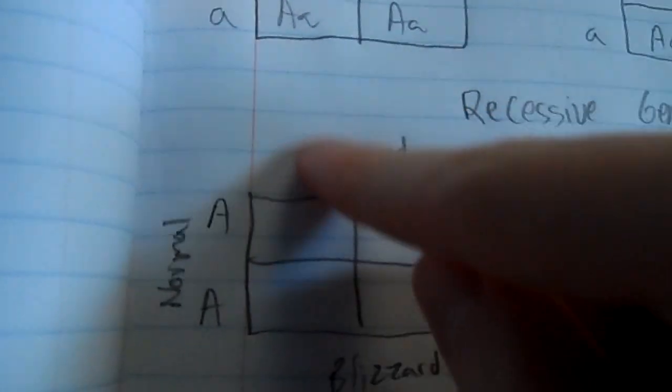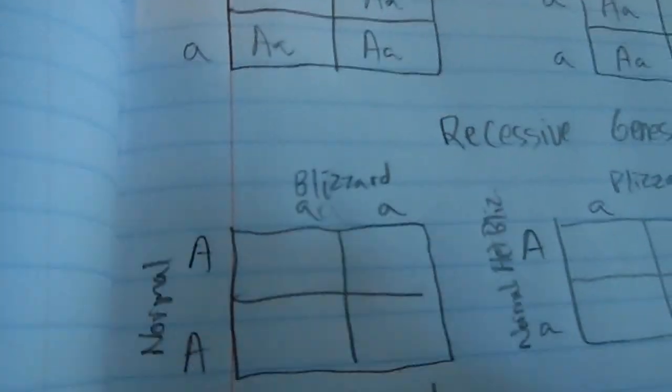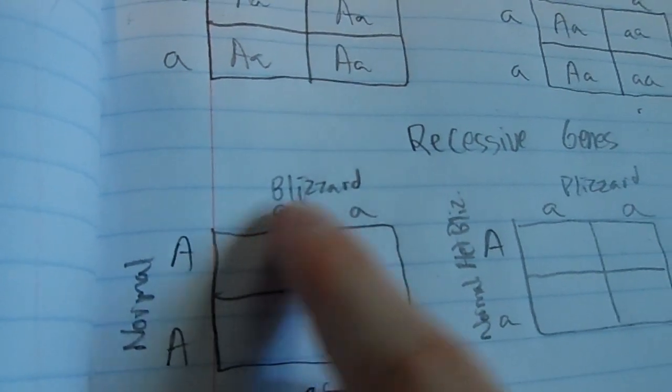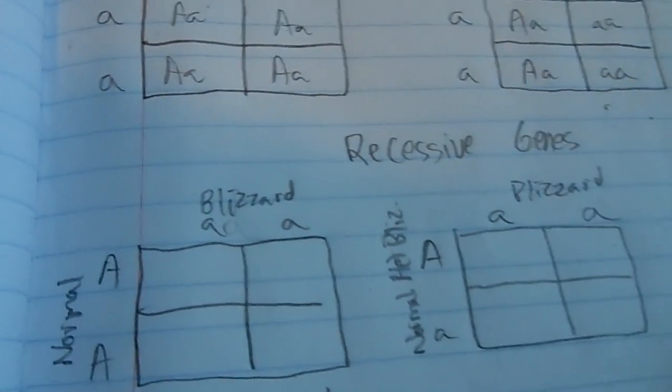And right here, as you can see, I got a blizzard on top and normal on the side. Blizzards are a recessive trait, so they get both little As, and normal is a dominant trait, so they get two big As.